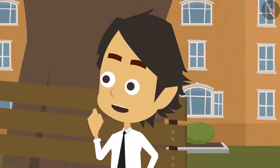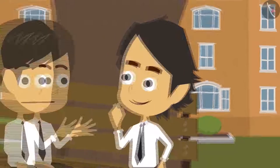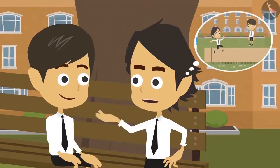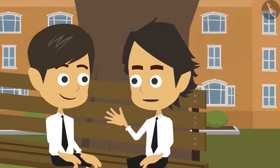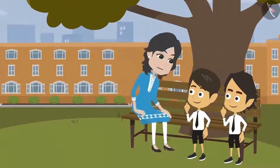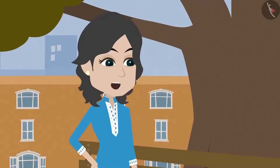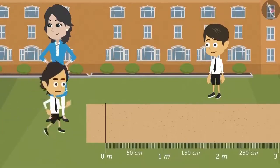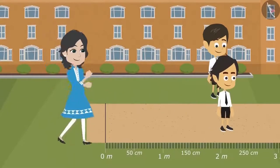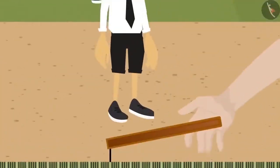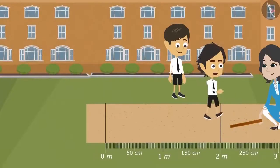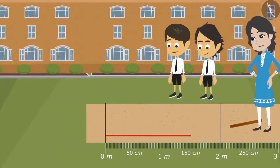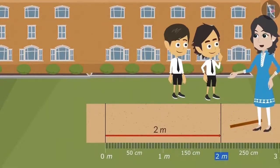Now I understand. Why is long jump measured in meters? Because a long jump will definitely be longer than 100 centimeters, so it makes it easier and practical to measure a long jump in meters. Now we have had a lot of talk. Come, jump and show so that we can measure it. Okay. I will jump first. How long did I jump? Let's measure it. You have jumped 2 meters, Ayushman.